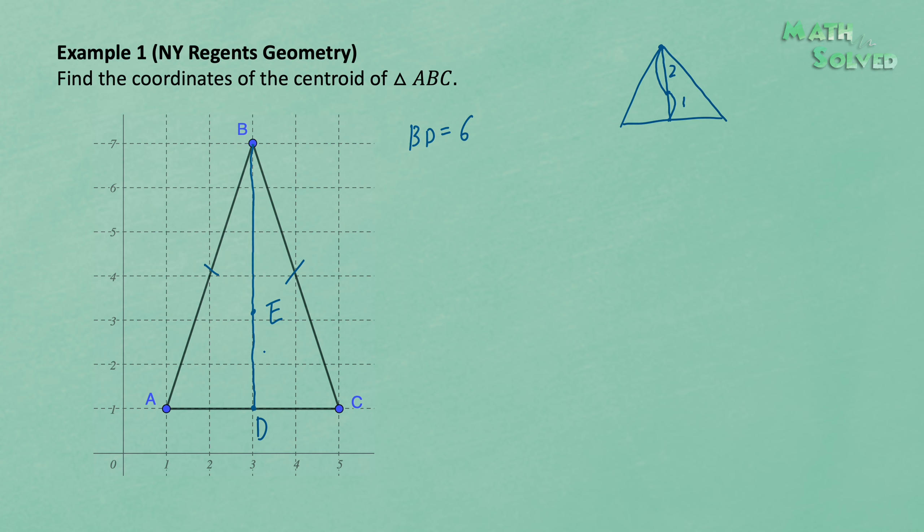And according to the ratio, we can assume ED is X. And therefore, BE is 2 times of ED, so BE is 2X. And in this diagram, we have 2X plus X is equal to the length of BD, which is 6 units.